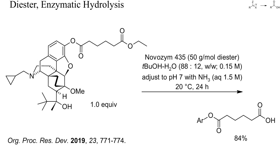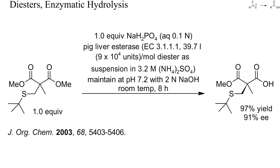In this example, an ethyl ester was saponified selectively in the presence of a chemically more reactive morphine-derived aryl ester, again with the immobilized lipase Novozyme. This here is an example of enzymatic enantioselective monosaponification of a maleate. The reaction mixture had to be buffered and the pH continuously adjusted as the hydrolysis proceeded.